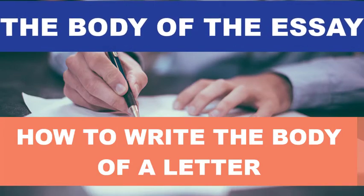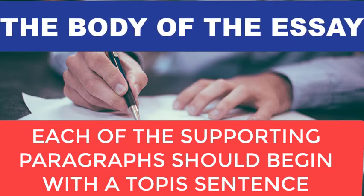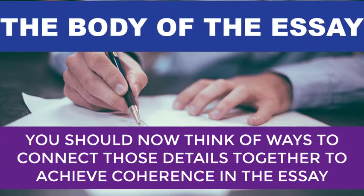Welcome to Chapter 4 of AC Writing. By the end of this chapter, you will be able to write the body of an AC. You should bear in mind that the major points that will support the thesis statement are developed in the body paragraph of an AC. The supporting points should be developed one after the other in separate paragraphs. Each of the supporting paragraphs should begin with a topic sentence that states the main point to be developed in that paragraph.